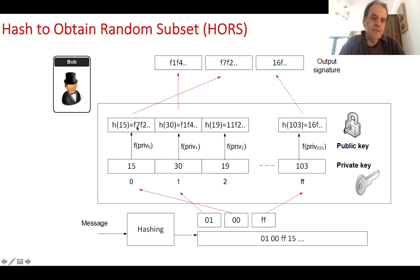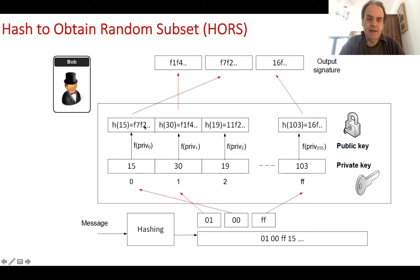We then apply a function: we take each value as a string, hash it, and it becomes some sort of hashed value. So we take 15 and hash it, take 13 and hash it, 19 and hash it, and so on. This becomes our public key, and it is this that will actually prove our output.